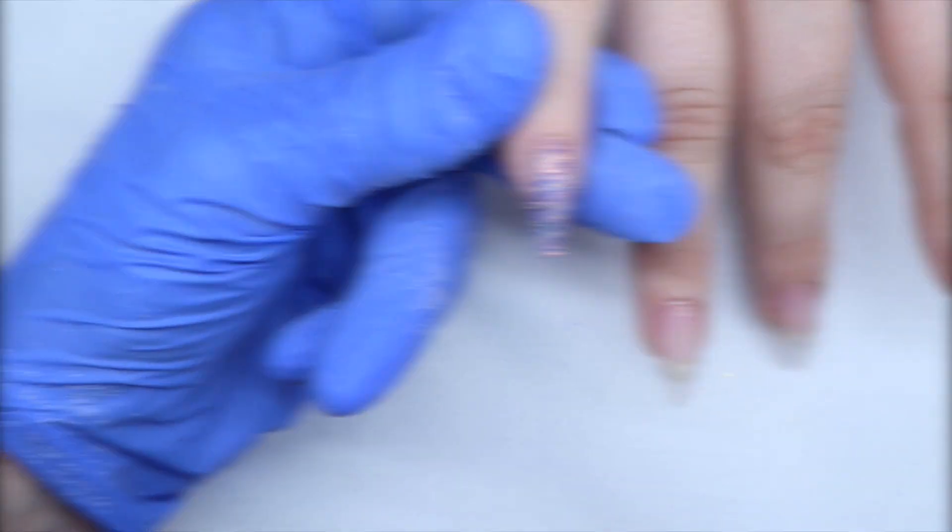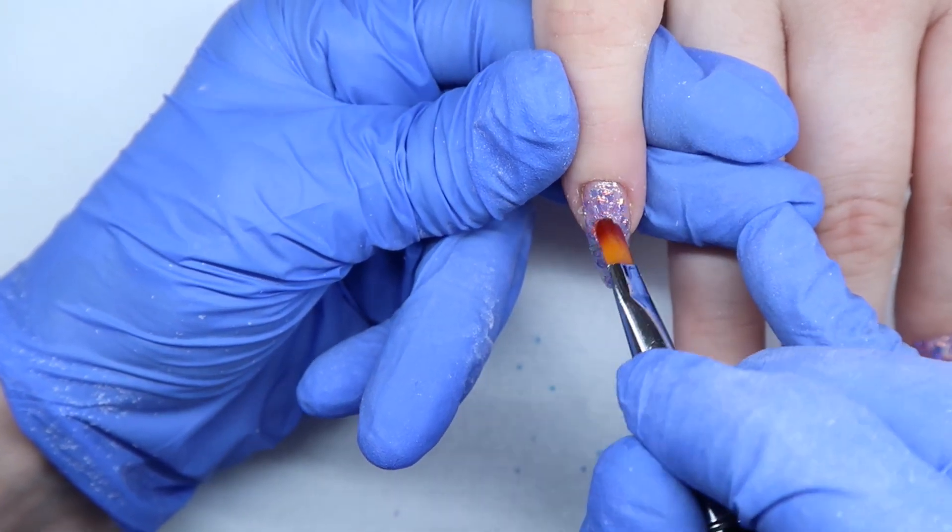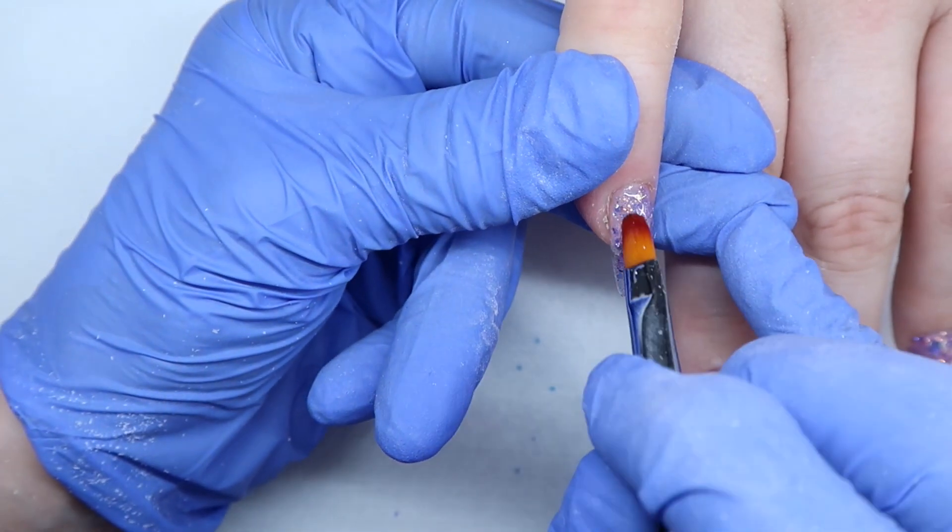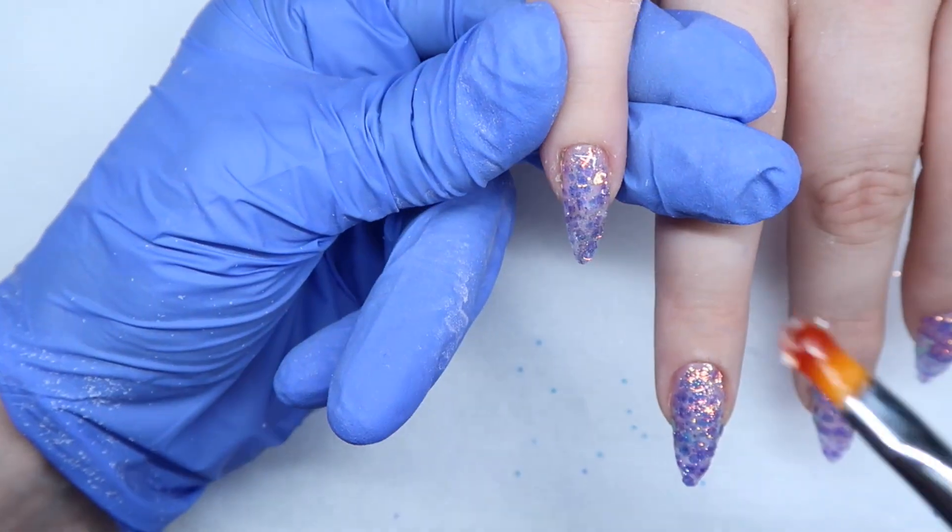So you're going to want to cure that. And then when you're happy with that you're going to come in and encapsulate all these nails. So here I'm coming in with that cool gel again. And I'm just applying a thin layer and this is my slip layer. So this layer is meant to help your bigger bead go where it needs to go.